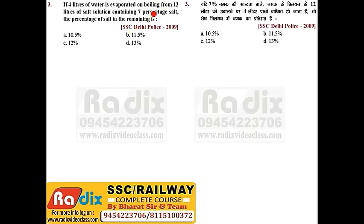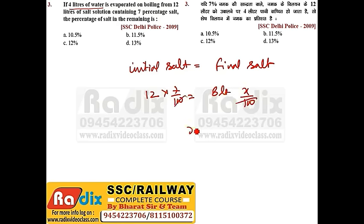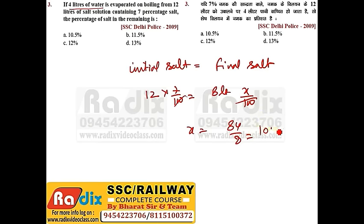Next question. If 4 liters of water is evaporated on boiling from 12 liters of salt solution containing 7% salt, find the percentage of salt in the remaining solution. If we evaporate water, the salt stays the same. Initial: 12 liters at 7% salt. After evaporation: 8 liters at x% salt. So 12 × 7% = 8 × x%, giving x = 84/8 = 10.5%. Answer is option A.